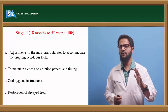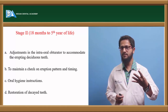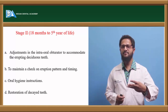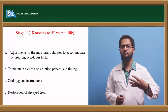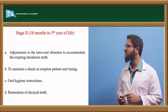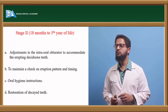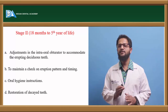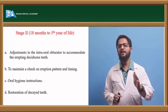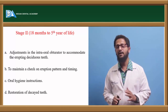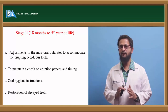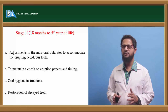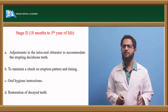Stage 1, comprising fabrication of the passive maxillary obturator, pre-surgical orthopedics, surgical management of cleft lip, and surgical management of cleft palate, is now complete. Stage 2, from 18 months to the 5th year, is the deciduous dentition period. This consists of adjustments in the intraoral obturator, checking the eruption pattern of primary teeth, protecting teeth from caries, performing fillings where required, giving oral hygiene instructions, and doing restorations as needed.